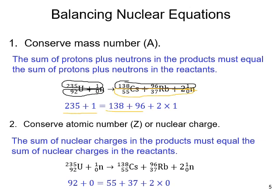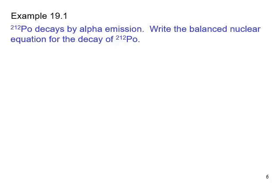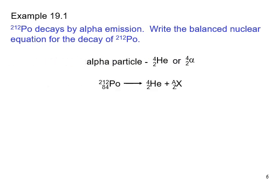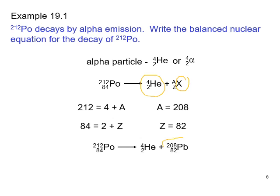Mass number should be conserved and atomic number should be conserved. Here's a quick example: polonium decays by alpha emission. You place an alpha particle on the product side, then use simple math to find the resulting nucleus. Subtracting gives A = 208 and Z = 82, which is lead. Lead-208 is the decay product when polonium undergoes alpha emission.